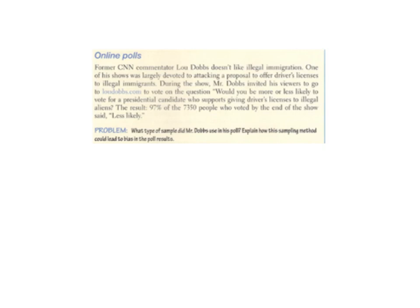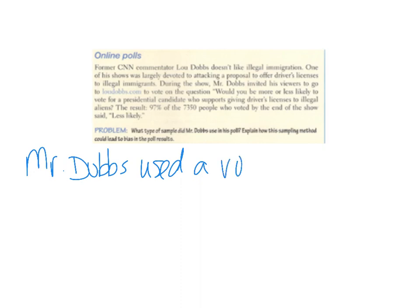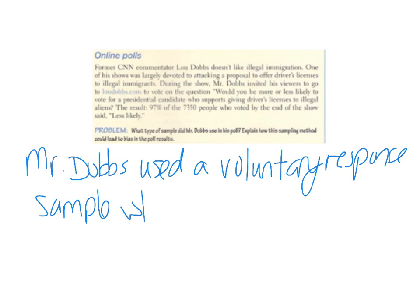We're going to write out what a full answer looks like for the check your understanding. The question asks: what type of sample did Mr. Dobbs use in his poll, and explain how the sampling method can lead to bias. A complete answer would be written in complete sentences: Mr. Dobbs used a voluntary response sample, where people went online to respond.